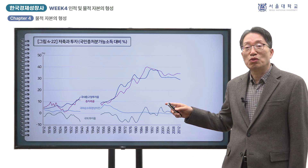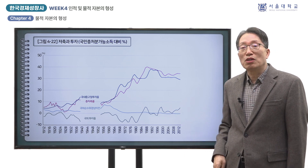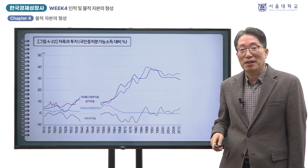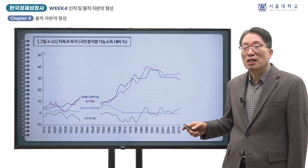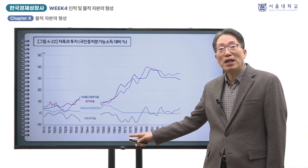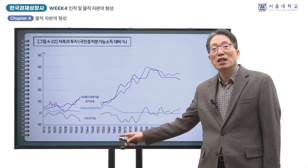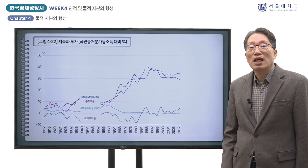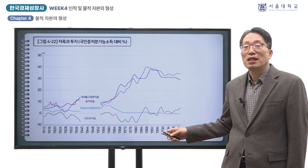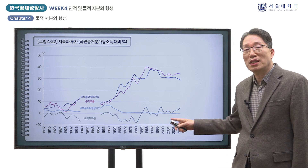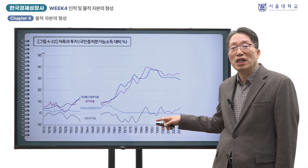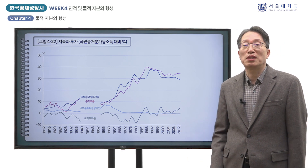투자율이 저축률보다 높아 국내 저축으로 재원을 충당할 수 없을 때에는 해외저축에 의존하게 됩니다. 이를 보여주는 것이 그래프의 국외투자율입니다. 1980년대 초까지 국외투자율이 마이너스로 되어 있는 것은 해외저축에 의존하면서 투자가 이루어졌음을 보여줍니다. 현재는 국외투자율이 플러스가 되어 국내 저축이 해외로 투자되고 있음을 알 수 있습니다.